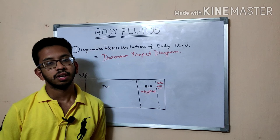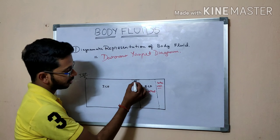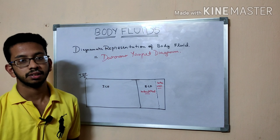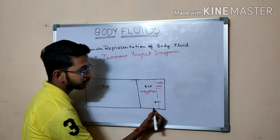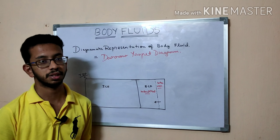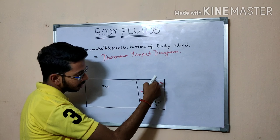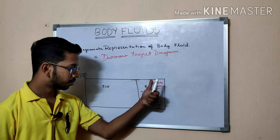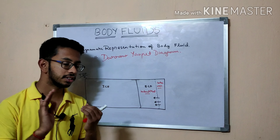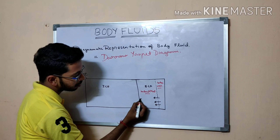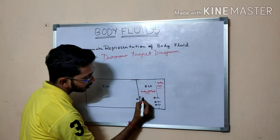Why is there a dotted line between the intravascular and interstitial compartments, but a solid line between ECF and ICF? The dotted line indicates that ions — potassium, sodium, magnesium, calcium — can easily cross the membrane separating the intravascular and interstitial compartments. That membrane is completely permeable to ions. The solid line, however, is not permeable to ions.